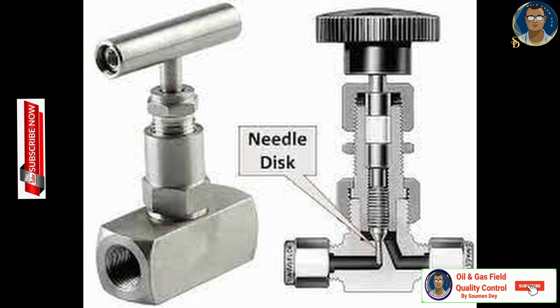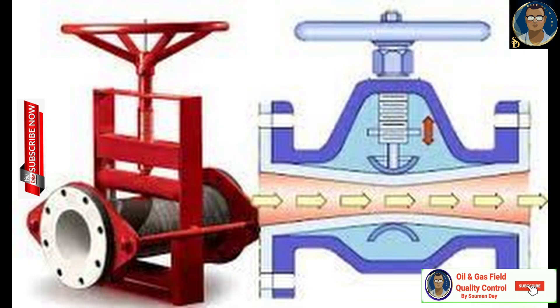Needle valves are mostly used in small diameter piping systems where fine and accurate flow control is needed. The needle valve gets its name from the point on a conical disc used within it. Pinch valves are mostly used for handling solid materials, slurries and liquids with suspended solids. These valves use a linear motion and feature an internal sleeve to isolate the media.